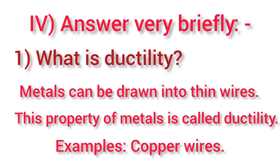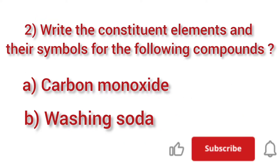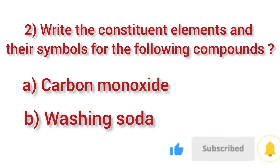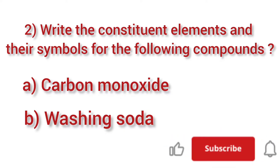Fourth section - Answer very briefly. First one: what is ductility? Metals can be drawn into thin wires. This property of metal is called ductility. Example: copper wires. Second one: write the constituent elements and their symbols for the following compounds.